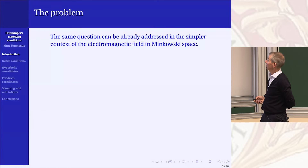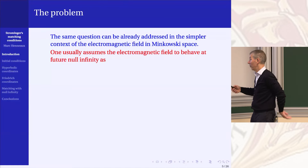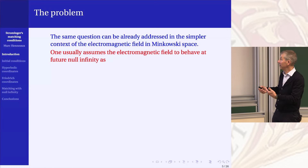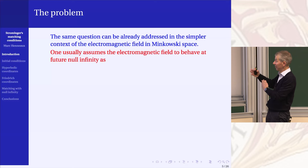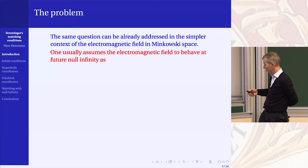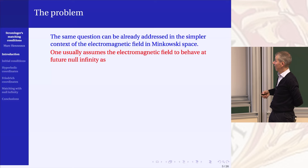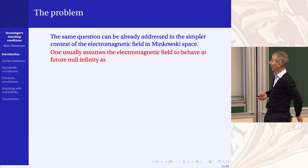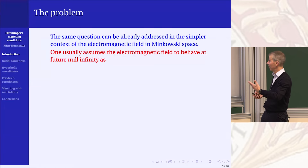You can ask the same questions in Minkowski space — what people working at null infinity do — but that's simpler for the Maxwell field in Minkowski space, because you have a fixed background geometry. You can say: I give you initial data for the electromagnetic field, and I see how they develop at future null infinity and past null infinity, and I compare.